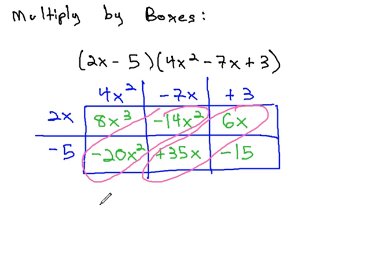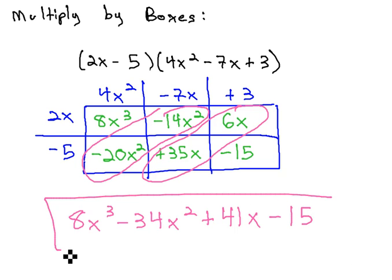Working across, we have 8x cubed. When we combine the x squareds, we get negative 34x squared. When we combine the x's, we get plus 41x, and finally a minus 15 at the end for our final product.